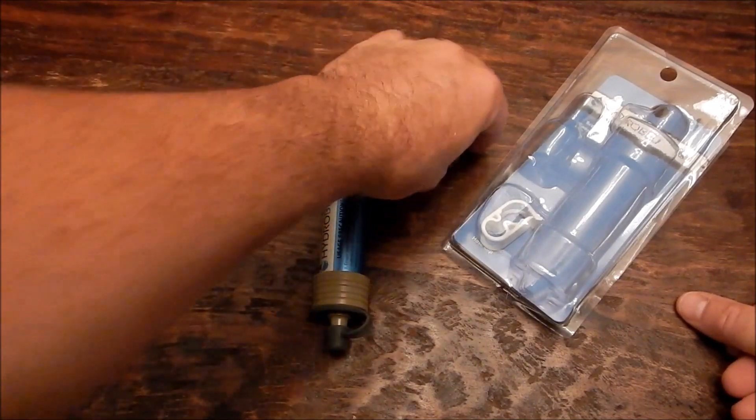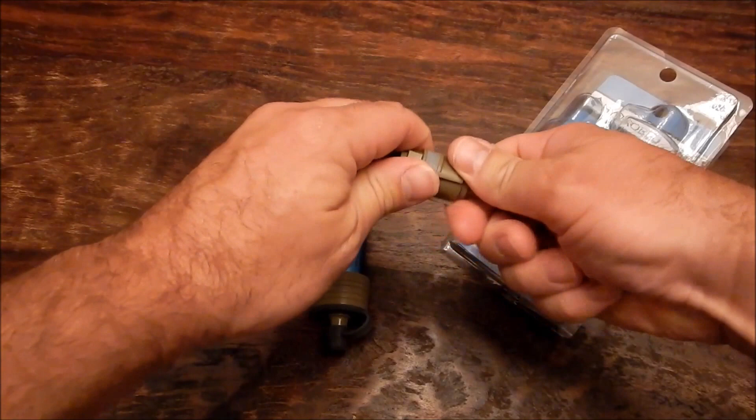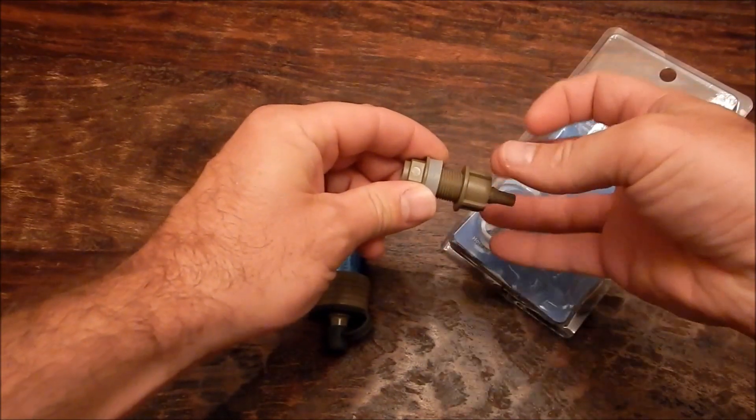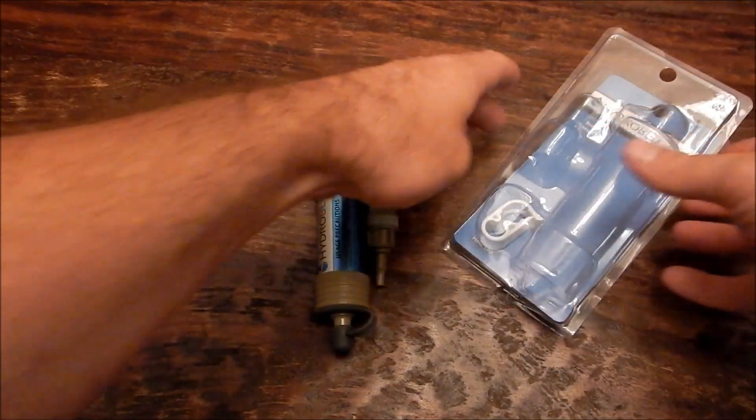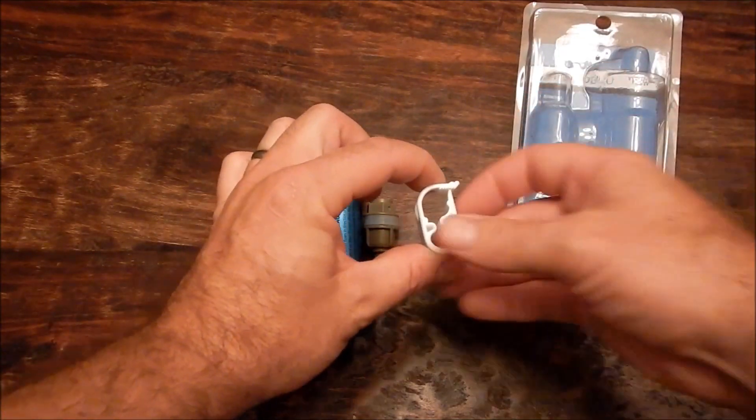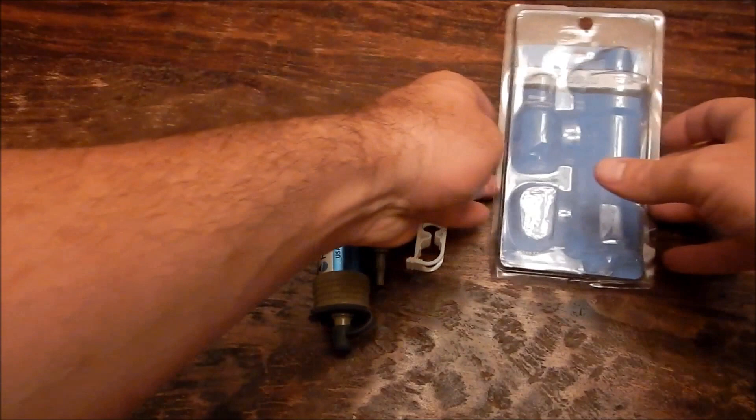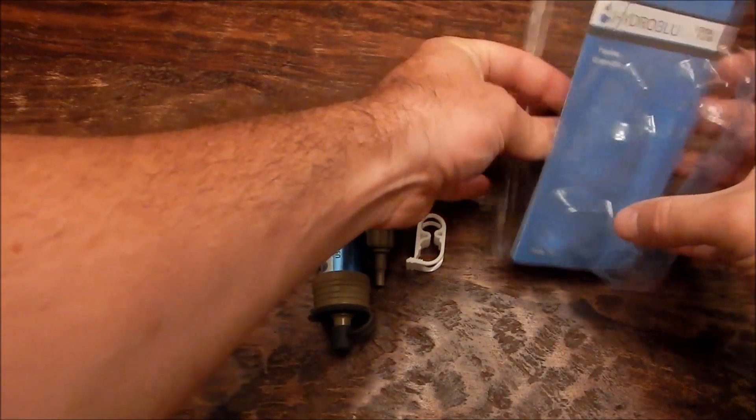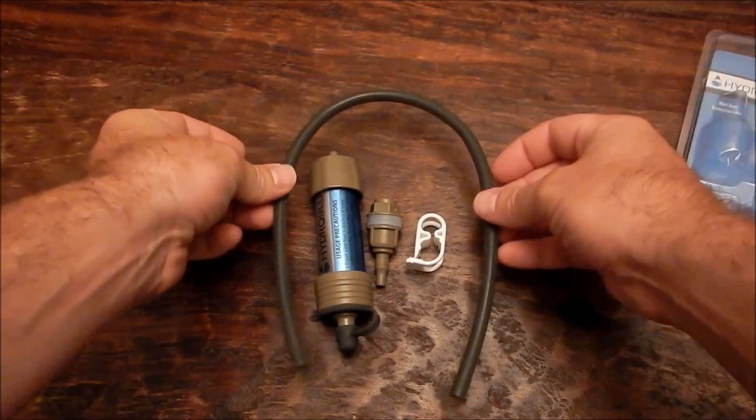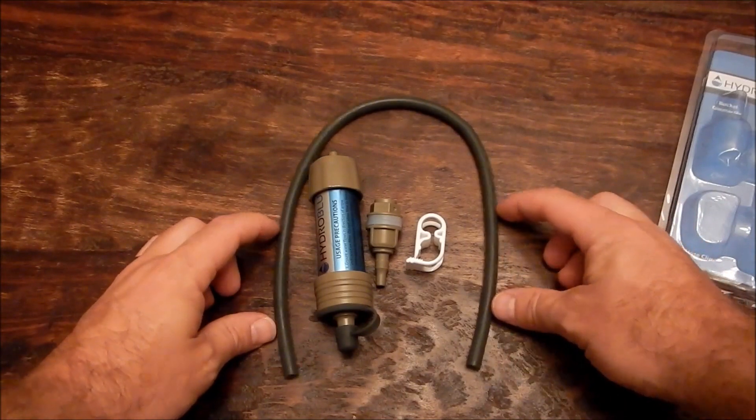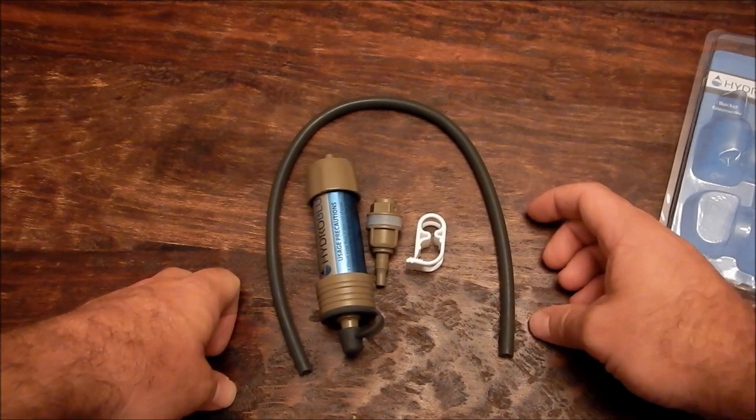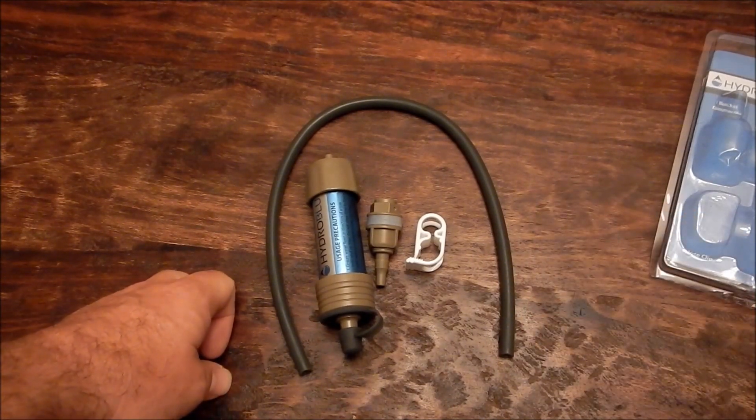It comes with the bulkhead fitting - I'll show you how that works here in just a second. It comes with your hose clip, I'll show you how that goes on, and your tubing. Comes with two feet of tubing to create your water column and the extra hose you're going to use to go down to your water bottle.